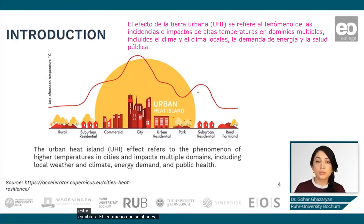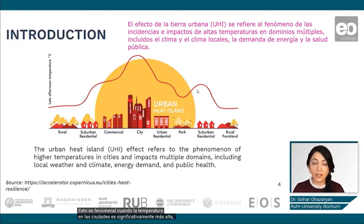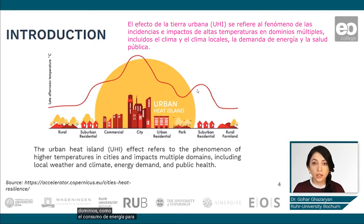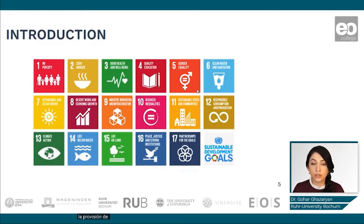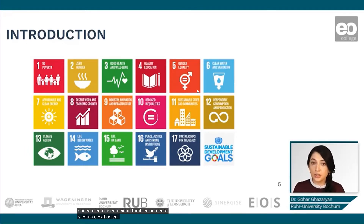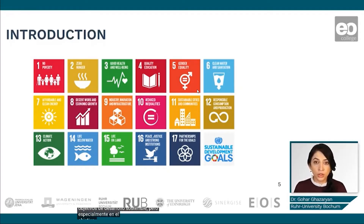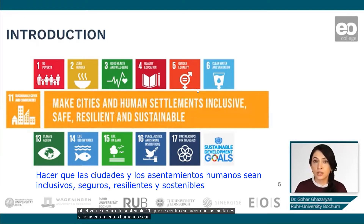Another phenomenon observed in urban areas is urban heat island — when the temperature in cities is significantly higher, which can have an impact on different domains such as public health, energy consumption, and local climate and weather. With increasing urbanization, other challenges such as the provision of infrastructure, sanitation, and electricity also increase. These challenges are embedded in different sustainable development goals, especially SDG 11, which focuses on making cities and human settlements inclusive, safe, resilient, and sustainable.